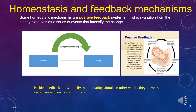Some homeostatic mechanisms are positive feedback systems, in which variation from the steady state sets off a series of events that intensify the change. Positive feedback loops amplify their initiating stimuli — in other words, they move the system away from its starting state. For example, during labor, the child pushes on the cervix, stimulating the body to send a signal to the brain. The brain releases oxytocin to stimulate the uterus to contract. As the baby pushes, more oxytocin is released, completing the positive feedback, and this continues until the baby is delivered.